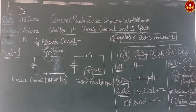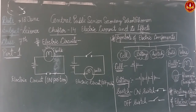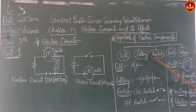Next is the symbols of electric components. There are various symbols of electric components. To draw an electric circuit diagram, we use various symbols. These are: cell, battery, switch, bulb, and wire.